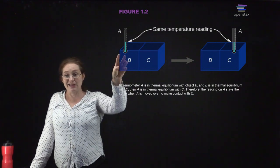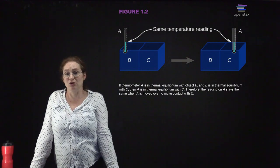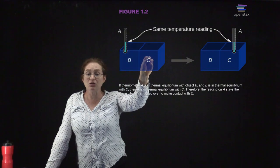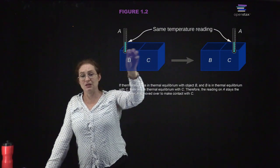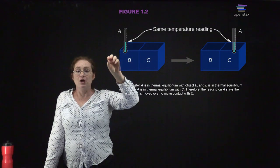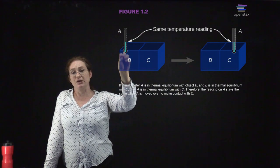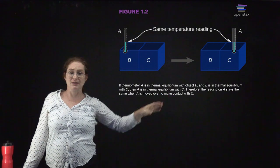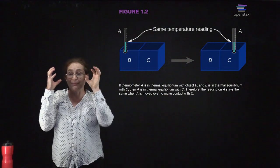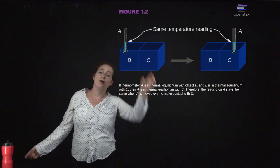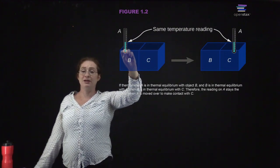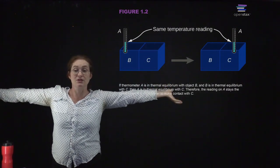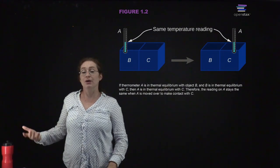When we talk about B and C being in thermal equilibrium, it means the atoms and molecules in B and those in C have roughly the same amount of energy on average. If B and C are in equilibrium with each other and you move the thermometer from B to C, the reading will stay the same. That is thermal equilibrium. Note that I said on average — there are distributions, so not every molecule has exactly the same energy, but on average they're the same.